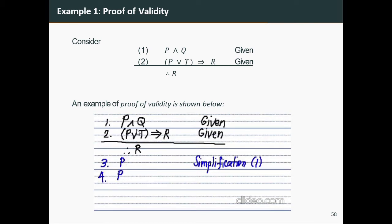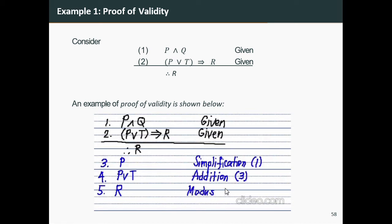Notice that in statement two we need p or t, so we can conclude p or t using addition. Addition is applied on statement three. Next, for number five, we can use statement two and statement four to conclude r. The reason is modus ponens, applied on statements two and four.